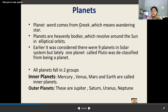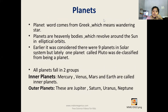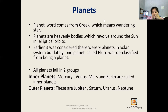Now, the word 'planet' comes from Greek, meaning wandering stars. Earlier it was considered there were nine planets in the solar system, but later the ninth was no longer considered a planet, so now we have eight planets.